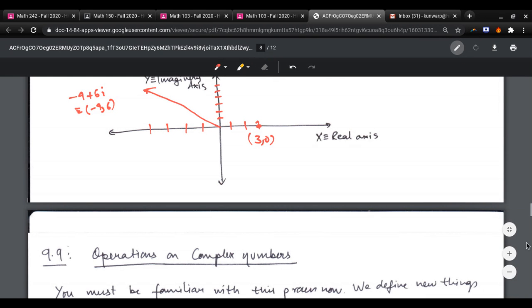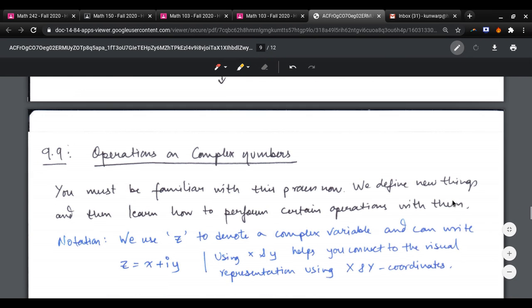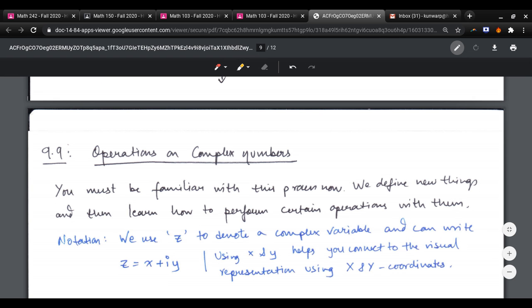Okay, now that we have defined complex numbers, let's look at what operations can be performed. So obviously, we're going to start with the simple operations of adding, subtracting, multiplying, and dividing.